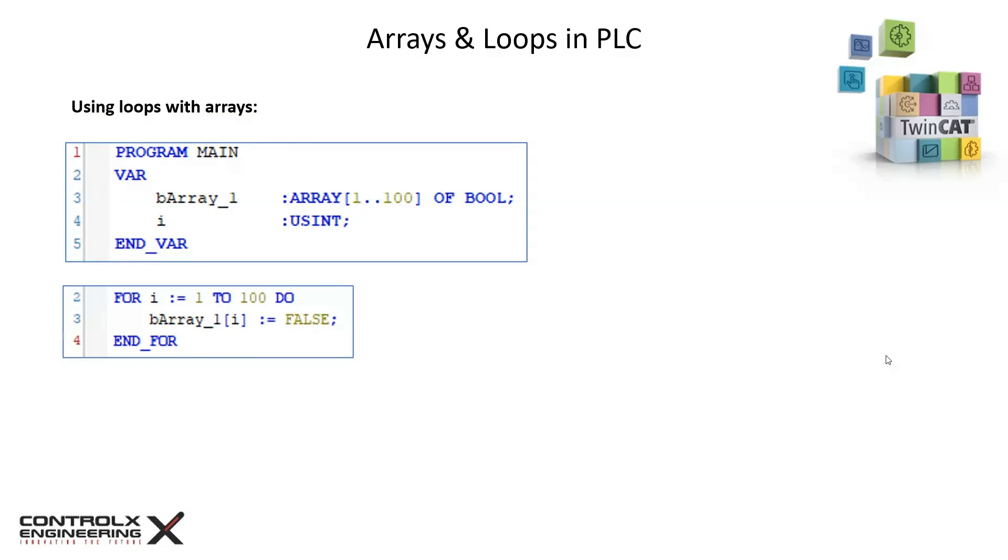We will use a for loop to set all the values in the array to false. The instructions to be repeated are inserted between the for and end for keywords. It is important to note that the loop is executed in a single PLC cycle.